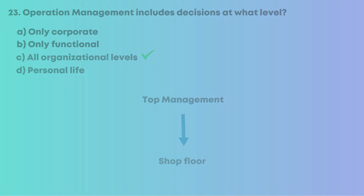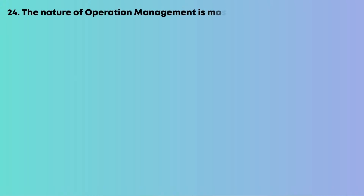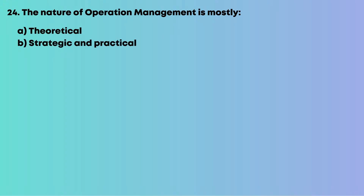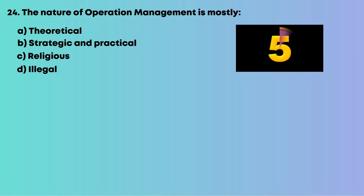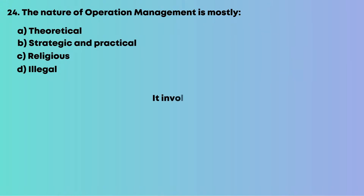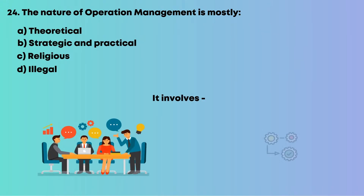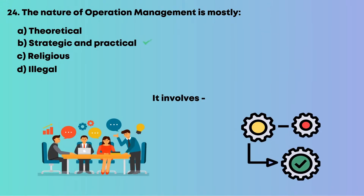Question 24: The nature of operations management is mostly: A, theoretical; B, strategic and practical; C, religious; D, illegal. It involves both planning and execution. The answer is B, strategic and practical.